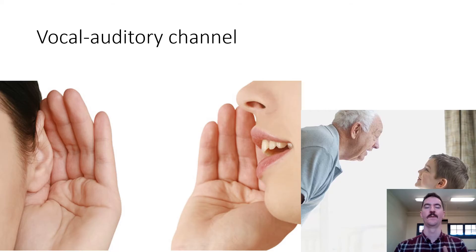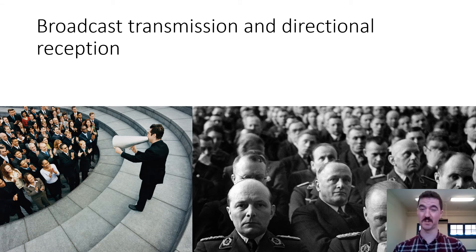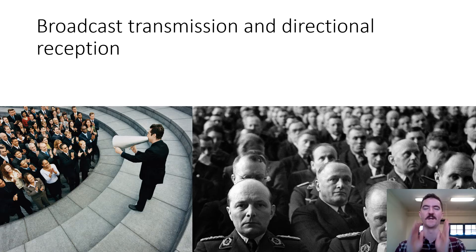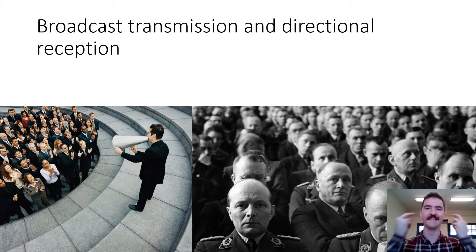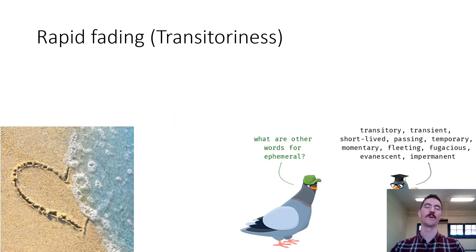These are the more primary ones perhaps. Vocal auditory channel: in the 1960s, sign language, Auslan, BSL British sign language, weren't really that important in linguistics. It was focused very much on the spoken word. To him, vocal auditory channel is one feature of language that's required. Broadcast transmission and directional reception sounds complicated but it's not really. When I talk, it goes out like that in a cone, and people hear it kind of like that in their ears.